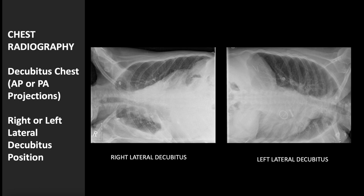Radiographic examination of the chest normally requires upright PA and lateral projections. In the upright position, the lungs can expand more fully and if fluid is present, it will layer out in the inferior aspect of the lungs. However, when the patient is too ill to stand upright but air-fluid levels must be demonstrated, the decubitus position may be used. Decubitus positions have two common elements: a horizontal central ray and a recumbent body position.